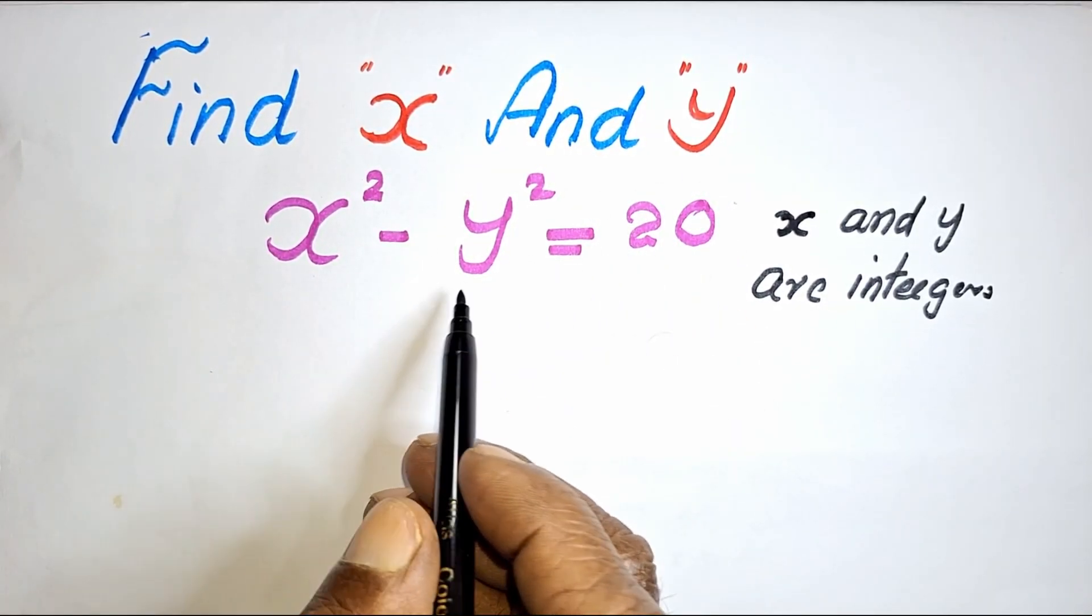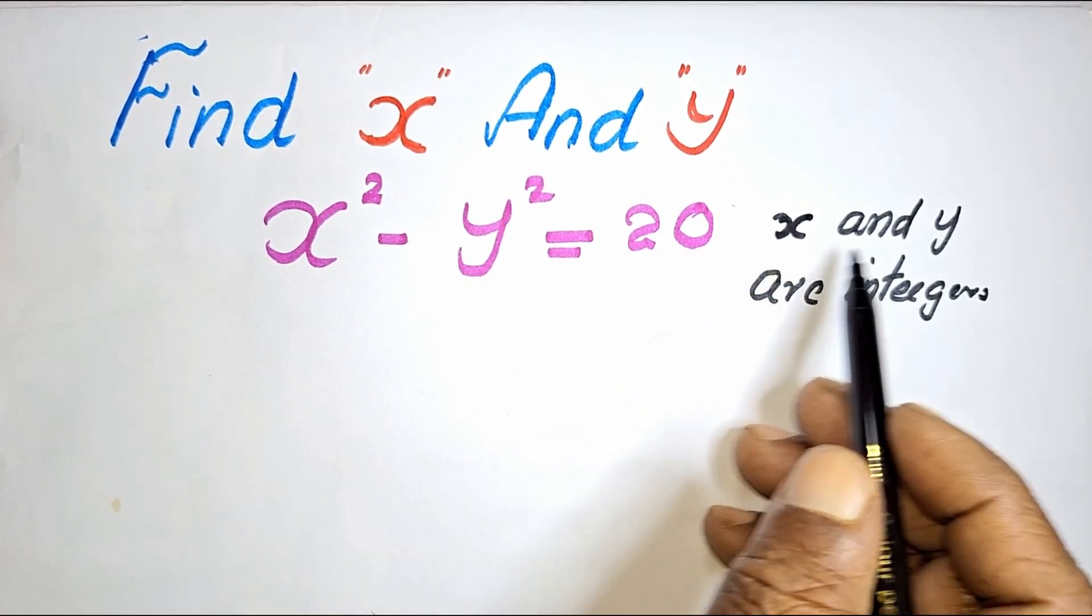Find X and Y. X squared minus Y squared is equal to 20. X and Y are integers.